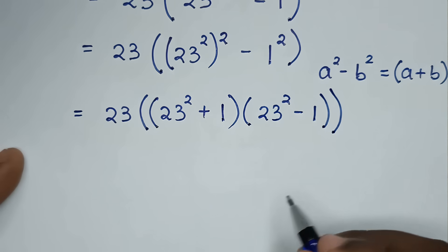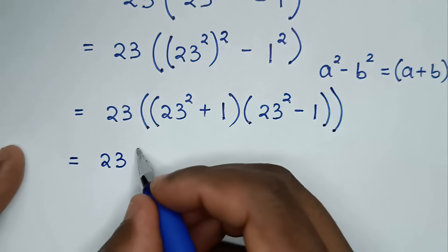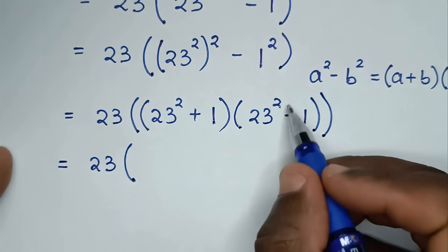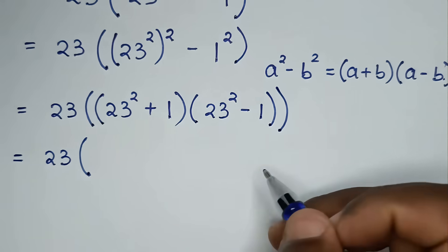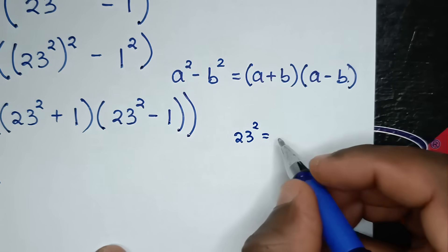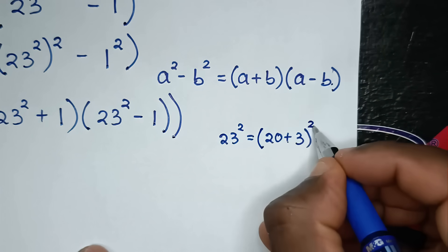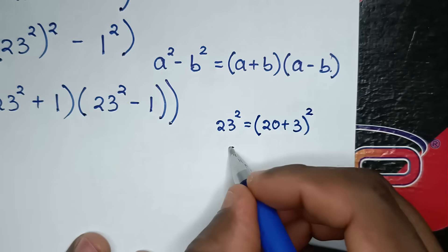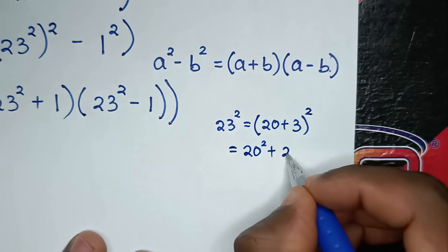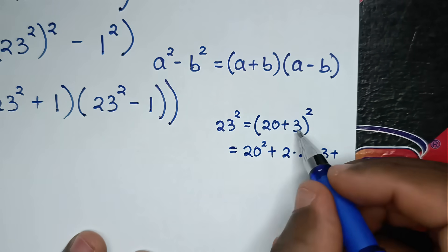Then in the next step we compute 23 squared. 23 squared is equal to 20 plus 3, bracket squared. So it will be 20 squared plus 2 times 20 times 3, then plus 3 squared.